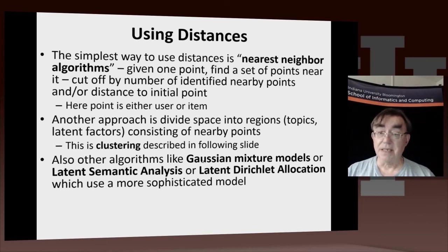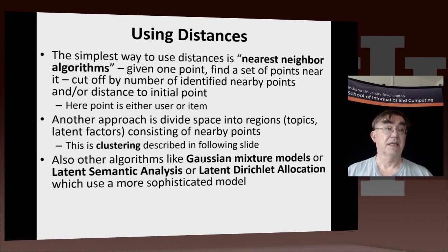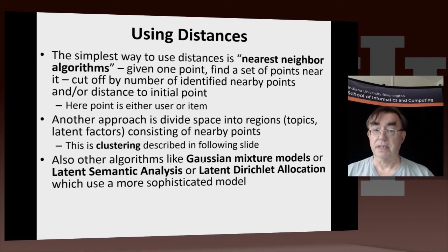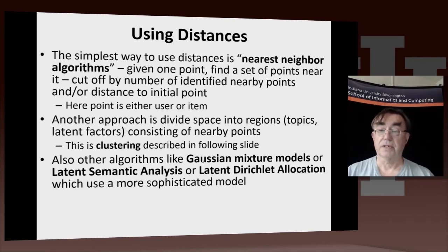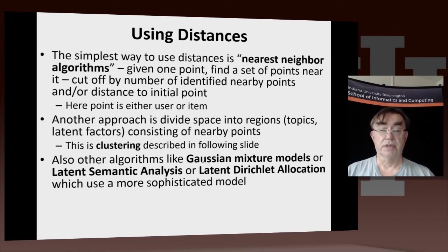The basic recommender algorithms are built around simple ideas such as nearest neighbor — that's why the concept of a space is interesting. We have intuition about space: things that are near each other are meant to be similar. Collaborative filtering is essentially a nearest neighbor algorithm, where you find the points that are near each other. There are two versions of collaborative filtering depending on whether you do it in the item space or the user space.